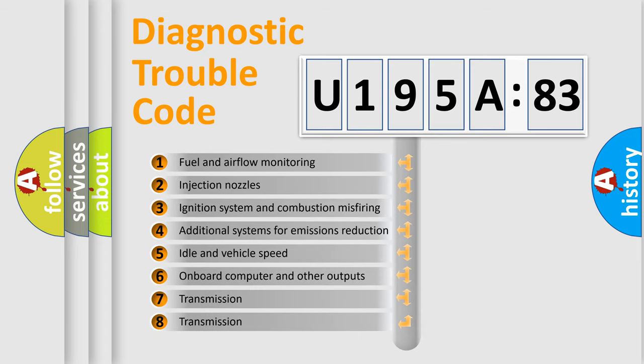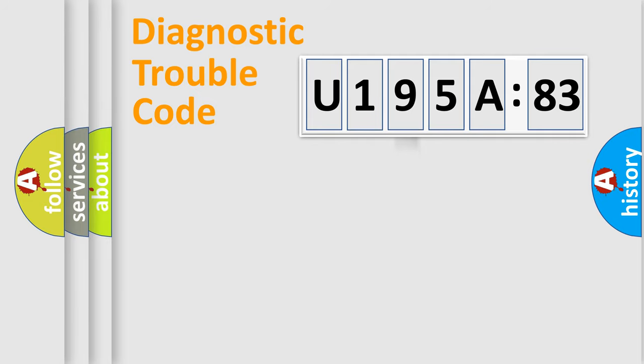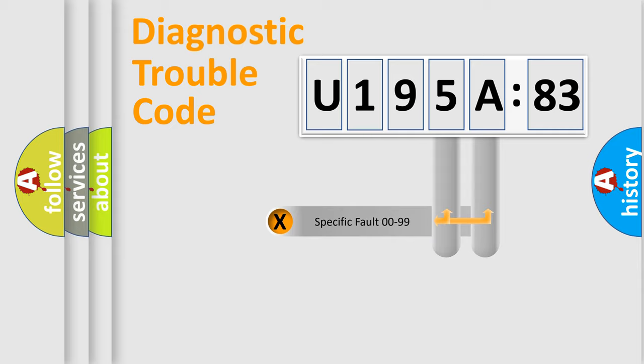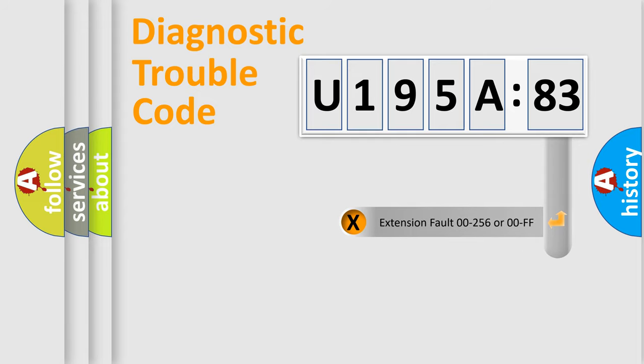The third character specifies a subset of errors. The distribution shown is valid only for the standardized DTC code. Only the last two characters define the specific fault of the group. The add-on to the error code serves to specify the status in more detail, for example, short to ground.